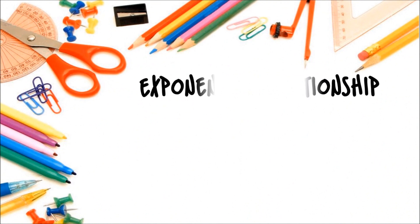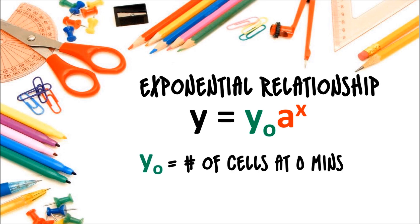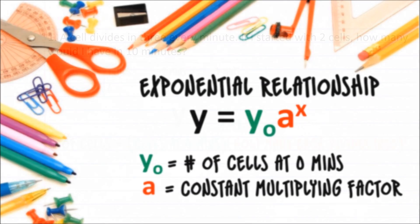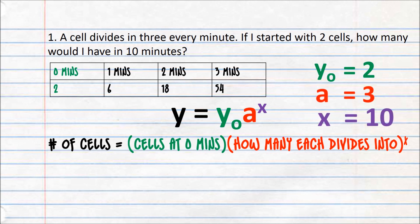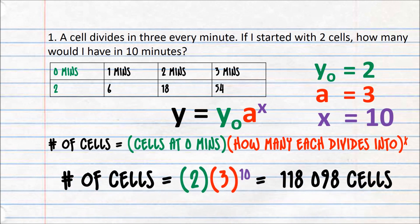This relationship has the general formula of y equals y₀ multiplied by a to the power of x. Y₀ represents the number of cells we have at zero minutes, and a represents the constant multiplying factor. Let us now apply this to our question. Our y₀ value is 2, as we have two cells at zero minutes. Our a value is 3, as each of the cells divide into 3. Our x value is 10, as we need the number of cells in 10 minutes. This gives us the answer of 118,098.